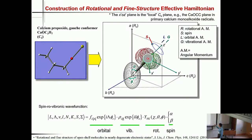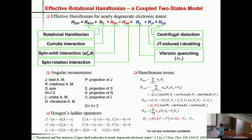We can project the orbital, vibrational, and spin angular momentum to the three principal axes, and by counting all the angular momentum interactions and the selection rules of angular momentum operators, we can figure out the effective rotational Hamiltonian, which has a rotational part, Coriolis interaction part, spin-orbital part, spin rotation part, vibronic quenching delta E naught, Jahn-Teller interaction which introduces L-type doubling, and finally a centrifugal distortion term.